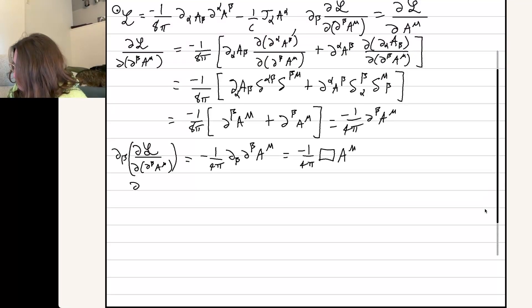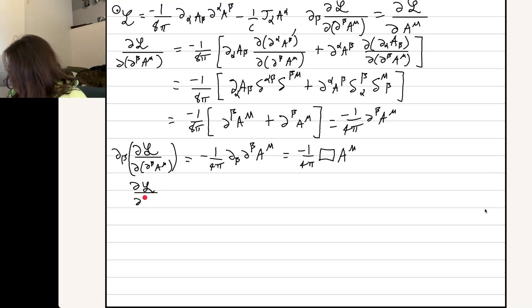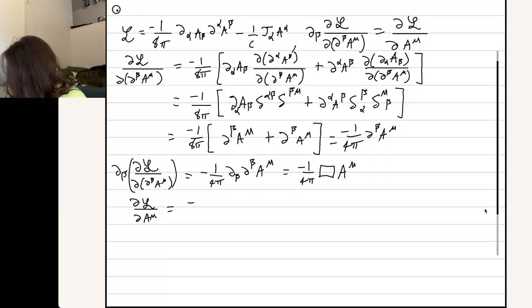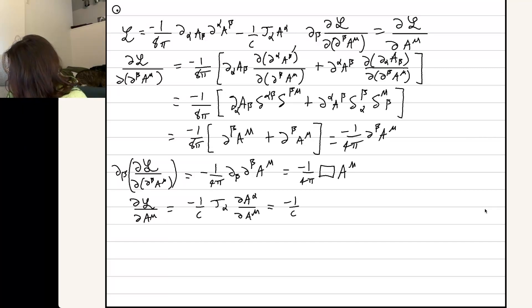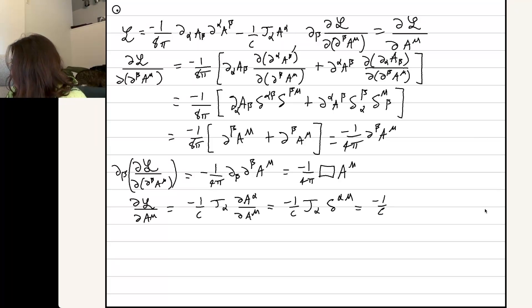Finally, we need to calculate the partial derivative of the Lagrange density with respect to just A_mu. So we get minus 1 over c, j^alpha, del A_alpha / del A_mu, which turns into minus 1 over c, j^alpha, Kronecker delta alpha_mu, which turns into minus 1 over c, j_mu.